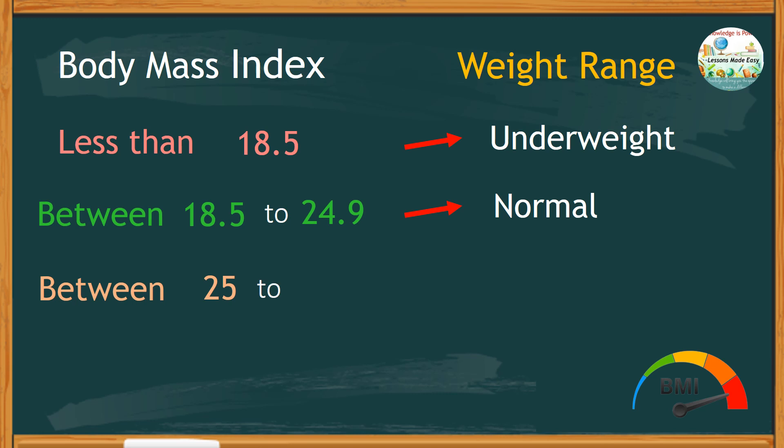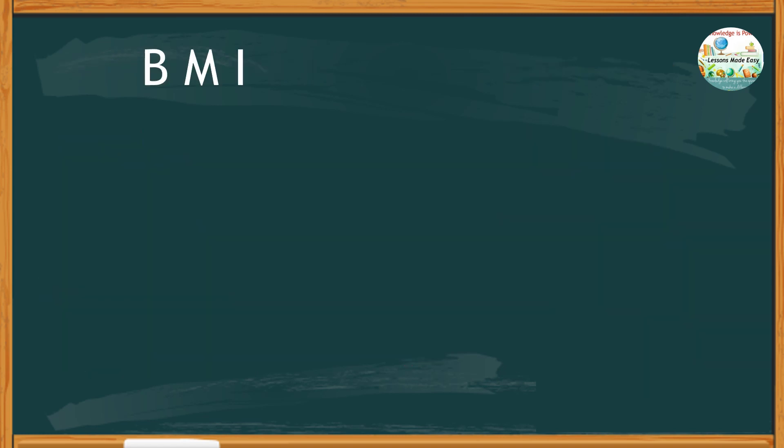Between 25 to 29.9 means a person is overweight. And if the BMI is over 30, this indicates that a person is obese. Although your BMI can monitor if you are at a healthy weight, it has limitations.